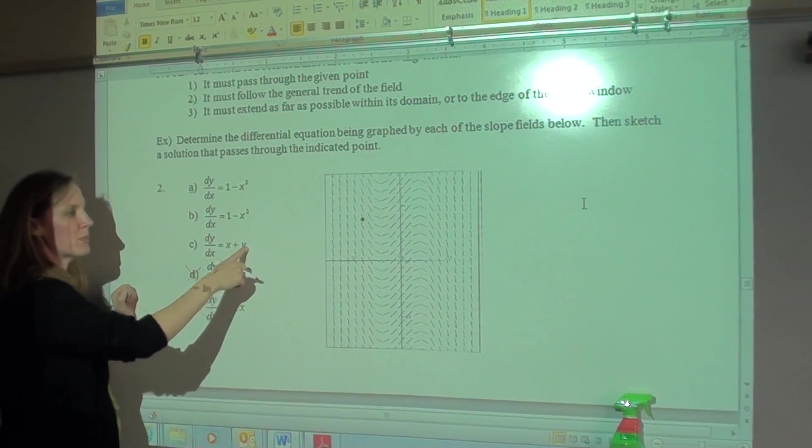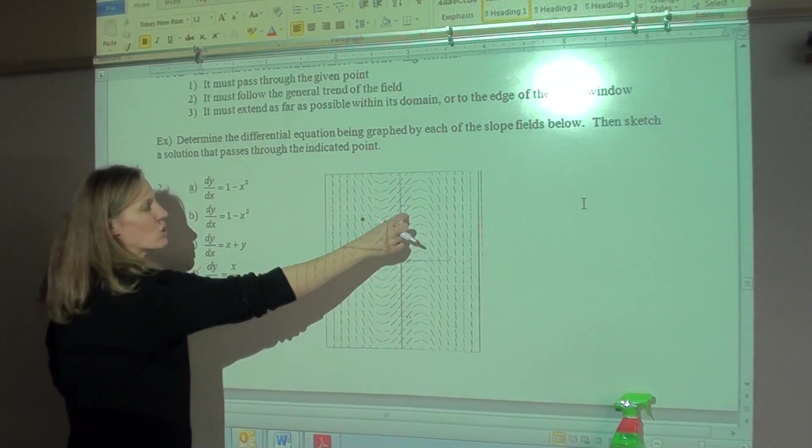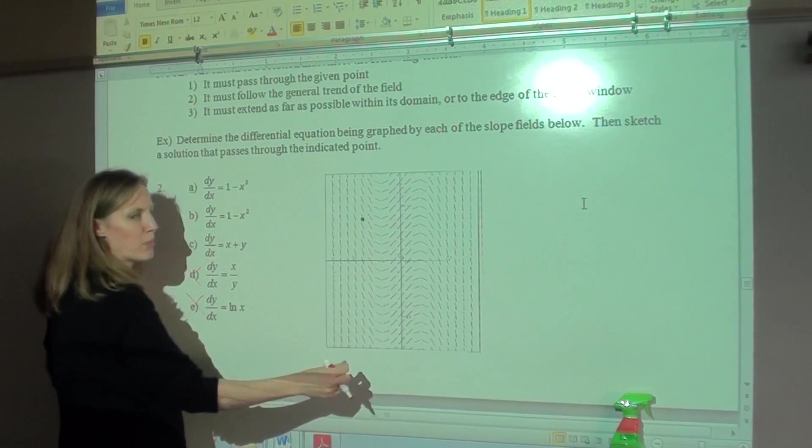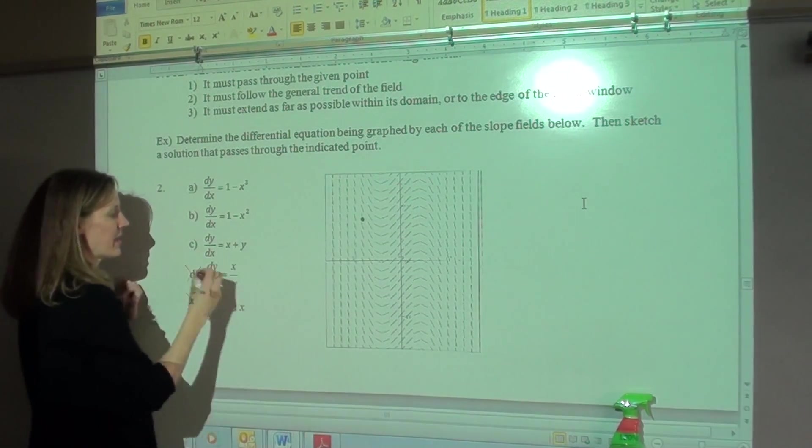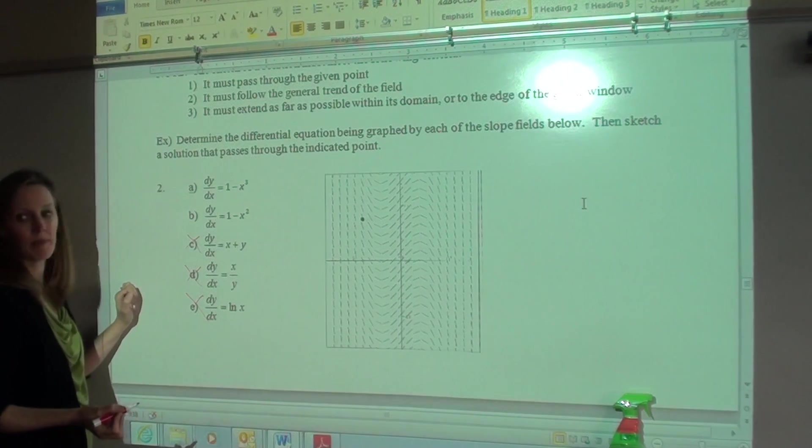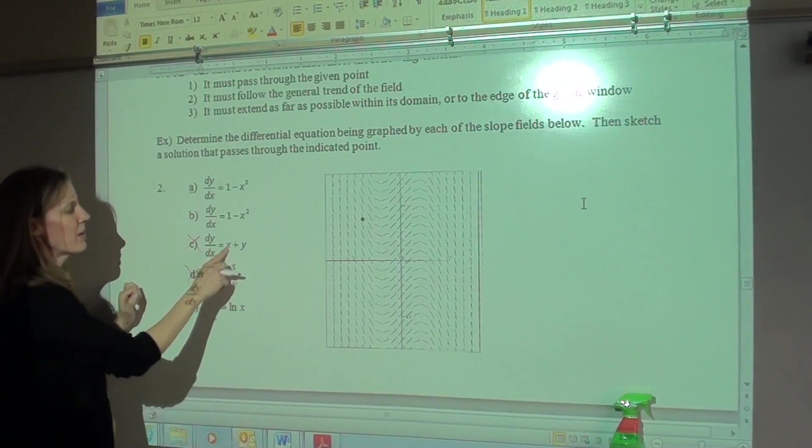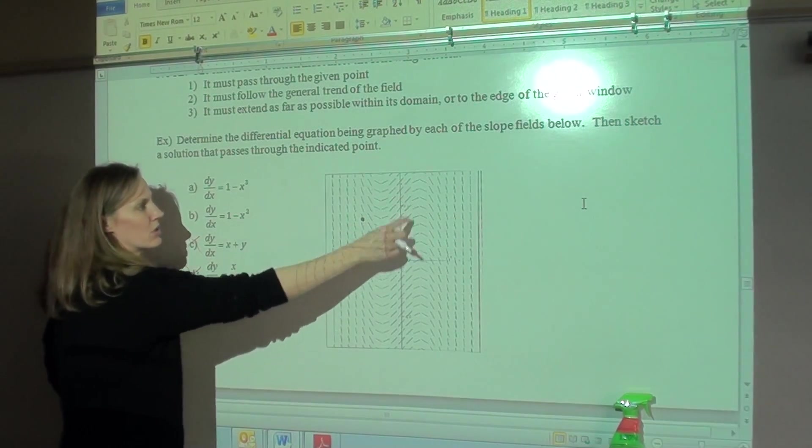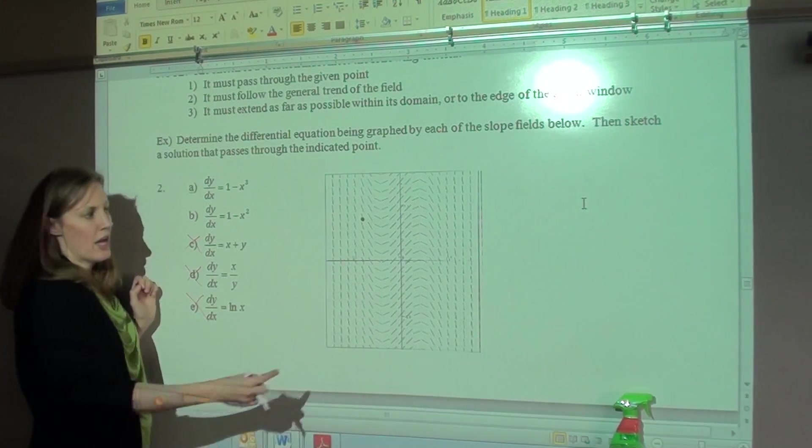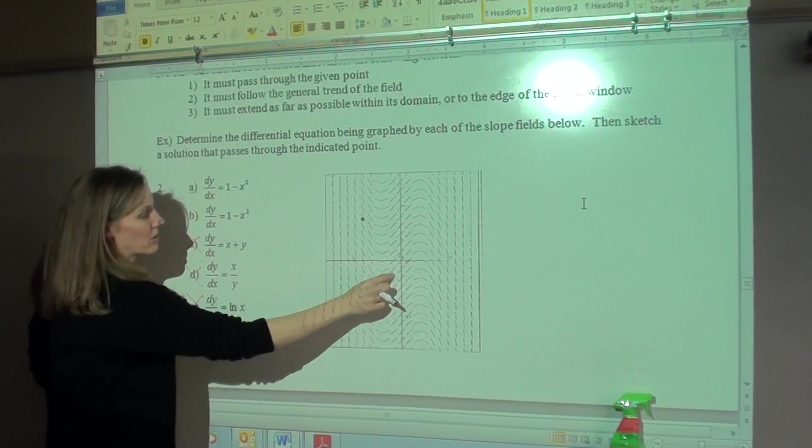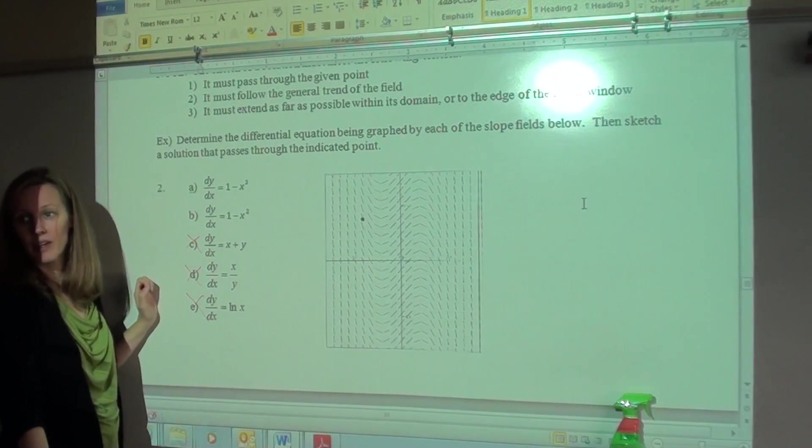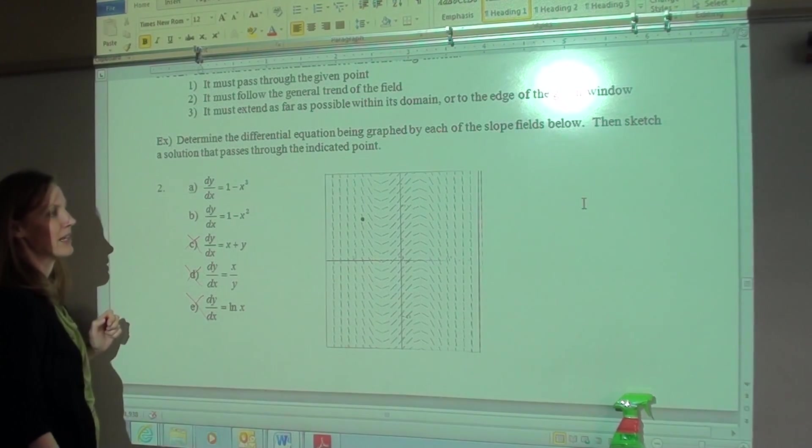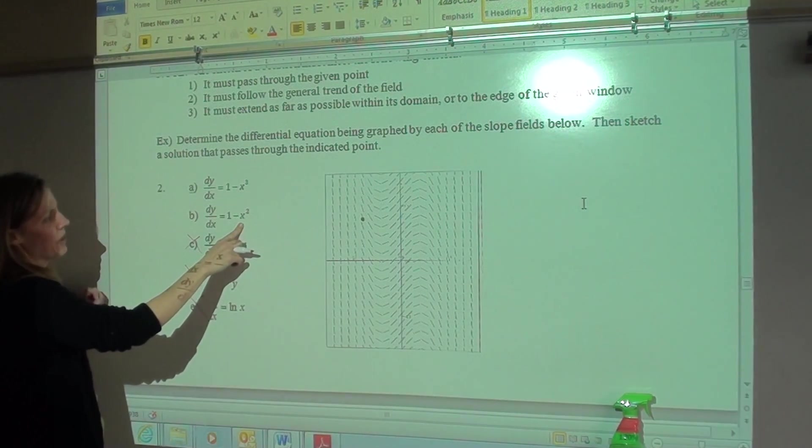Here, if I plug in an x of zero, then the slope would always be whatever the y value is. So it should be getting steeper as you go up, but it's not. It's staying the same. So that one's out. Wait, what? I think it's three. So if I plugged in a zero, like zero, one, it would be one. Zero, two, it would be two. Zero, three, it would be three. Oh, okay. And here's an easy one. Zero, negative, one, it should be negative, right? Okay. So that's why that one's out.